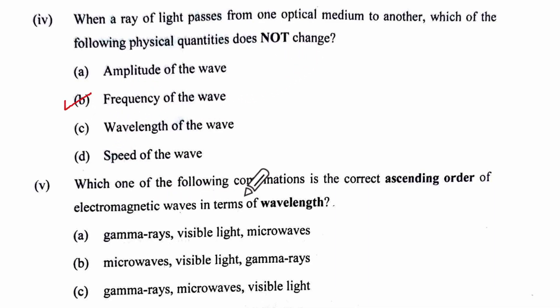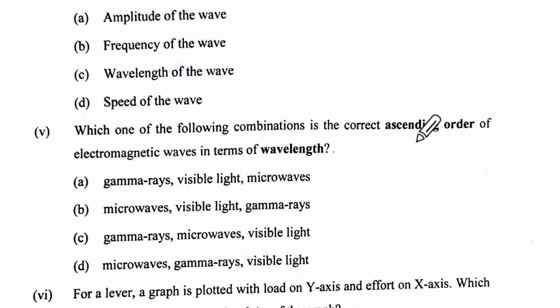Which one of the following combinations is the correct ascending order of electromagnetic waves in terms of wavelength? Ascending means we start with the minimum wavelength. Minimum wavelength will be from gamma and maximum will be micro with visible. Gamma, then micro, then visible. The correct option is A.